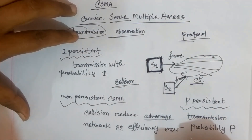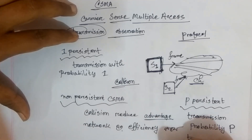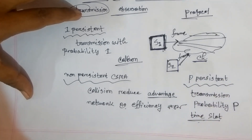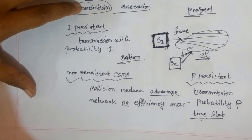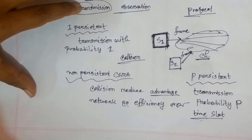P-Persistent is used when the channel is divided into time slots. At the beginning of a slot, a station senses the channel. If busy, it waits for the next slot. When the next slot arrives, it starts transmission again. This is how P-Persistent differs from One-Persistent and Non-Persistent.